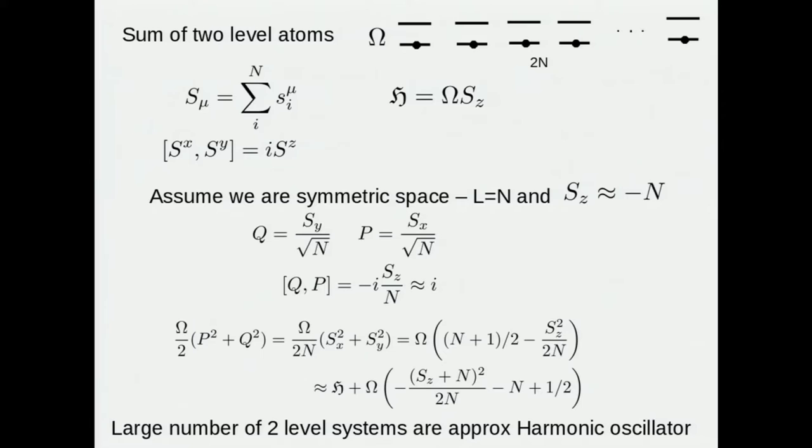And we assume that we're in a state that's very close to the ground state, namely capital S of Z is equal to minus N. Then we can define a Q and a P position and momentum given by SX divided by square root of N and SY divided by square root of N. The commutator between these two guys is, since those are just spins, that's SZ. But if SZ is very close to N, this is just equal to I, which is precisely the commutation relation between the momentum and the position.